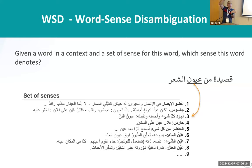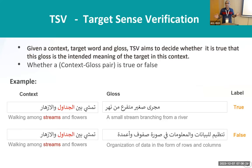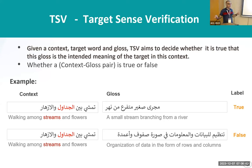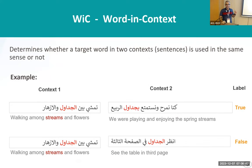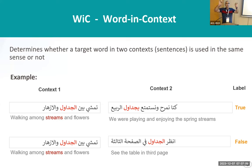It means you have the senses with you. The second one is called TSV: given a context and a gloss definition or a sense, we classify whether this meaning is correct — this is called TSV. The third one is called WIC: given two sentences with a shared word between them — for example, 'Jadawil' — the same word in two sentences, we want to know whether the two words in these two sentences have the same meaning or not. So this one is true and this one is false.